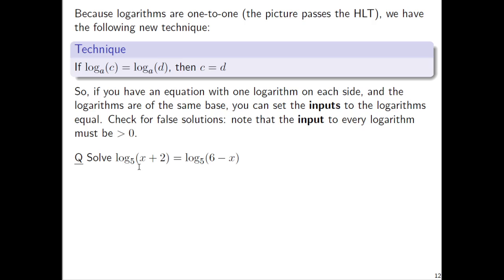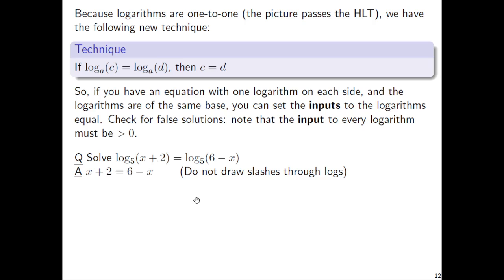Let's solve log base 5 of (x + 2) equals log base 5 of (6 − x). We've got a single logarithm on each side — log base 5 and log base 5 — they are of the same base, so we get to set the inputs equal. Don't draw slashes through the logs. It's tempting, but people end up thinking it means log base 5 times (6 − x), which it's not — there's no multiplication. Just use the technique: set the inputs equal.